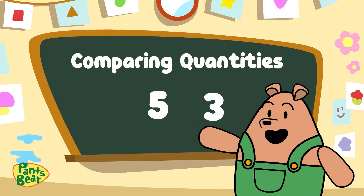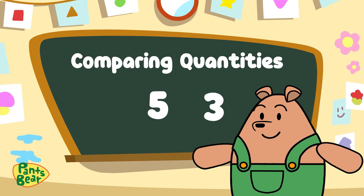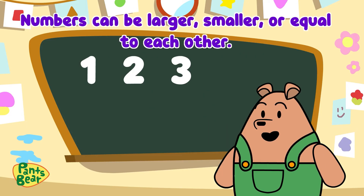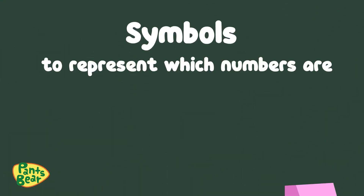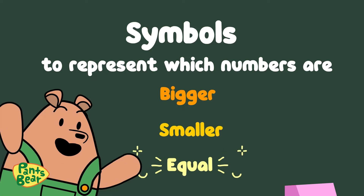When we put two numbers side-by-side to see which is larger, we're comparing numbers. Numbers can be larger, smaller, or equal to each other. We normally use symbols to represent which numbers are bigger or smaller than the other. We can also use symbols to represent equal numbers.